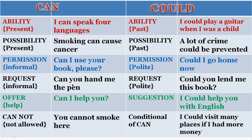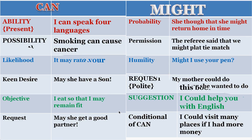Colloquially, if you are speaking, you can always say 'Can you give me the pen?' or 'Can you lend me this book?' But if you are doing it officially: 'Could you lend me this book?' or 'Would you mind giving me this book?' For offers: 'Can I help you?' For suggestions: 'I could help you with English.' And for prohibition: 'You cannot smoke here.' Conditional: 'I could visit many places if I had more money.'